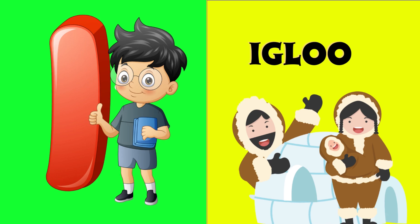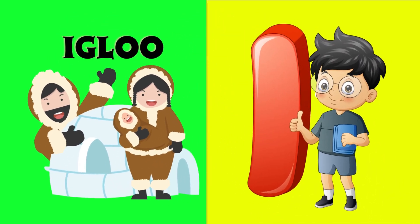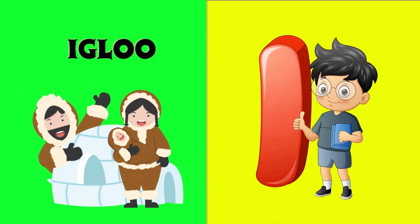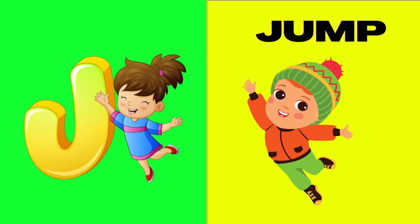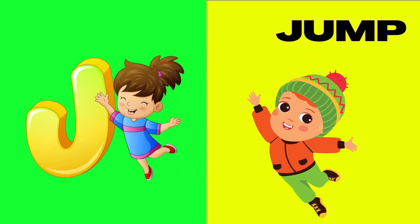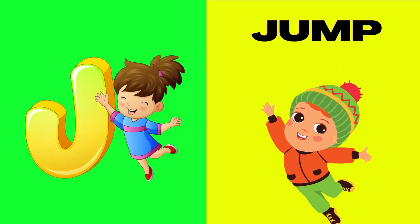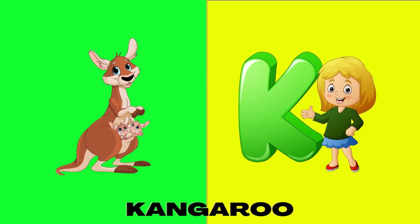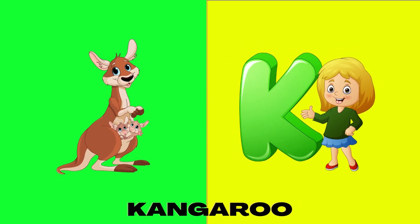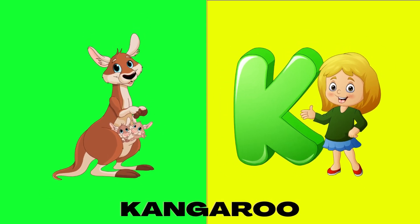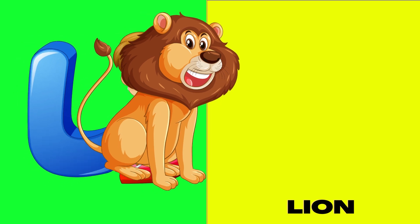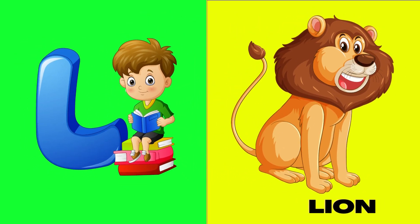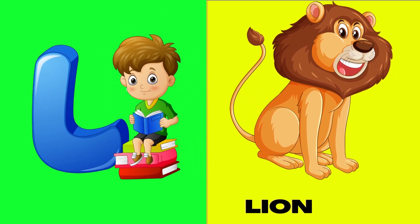I is for igloo, i-i-igloo. J is for jump, j-j-jump. K is for kangaroo, k-k-kangaroo. L is for lion, l-l-lion.